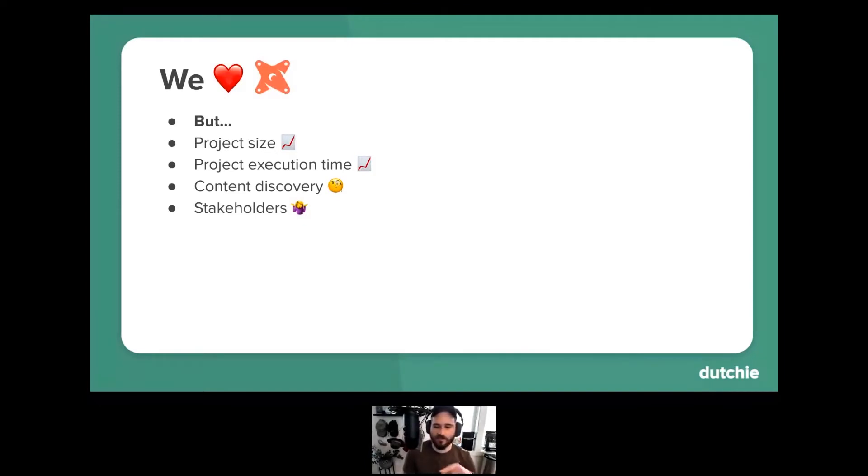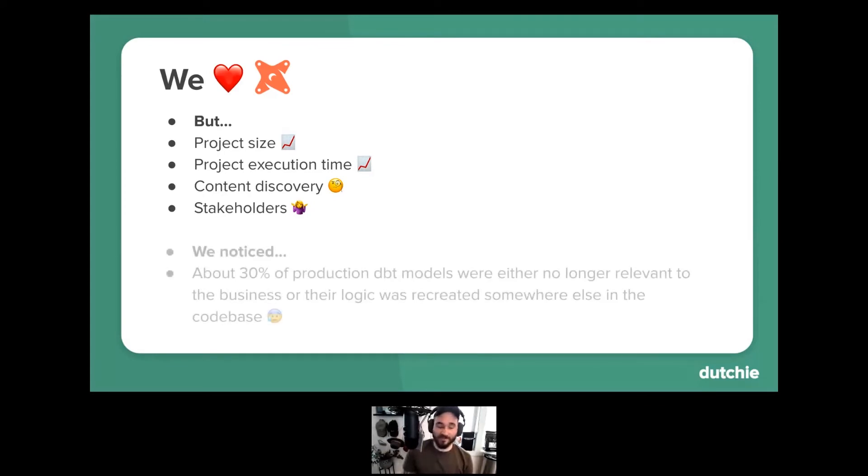Not only this, but we also noticed that folks were suddenly having a lot harder of a time finding the content they wanted to find in our DBT project. And we noticed that this was leading to a pattern of forking DBT models instead of updating them, ultimately creating more and more project bloat over time. And what we realized is that we had a little bit of a scaling problem on our hands. We noticed that after some investigation, about 30% of our production DBT models were essentially outdated, duplicated, or completely unused.